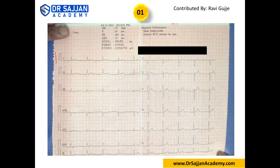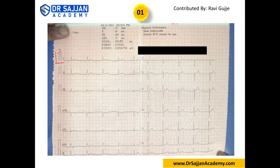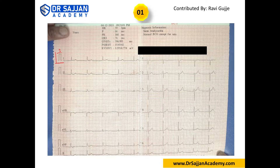The first step is standardization. It has to be 10 box height and 10 box width, but the width here looks around 3. So whenever you're applying the ECG level one formula, you have to be careful when looking at the width of the ECG. This means it is not properly standardized.